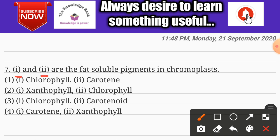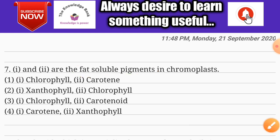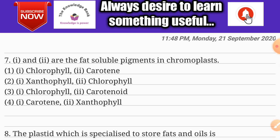Question number seven: find the two fat-soluble pigments in chloroplasts. Options are chlorophyll and carotene, xanthophyll and chlorophyll, chlorophyll and carotenoid, and carotene and xanthophyll. The correct answer is option four: carotene and xanthophyll.